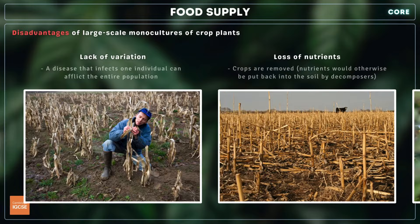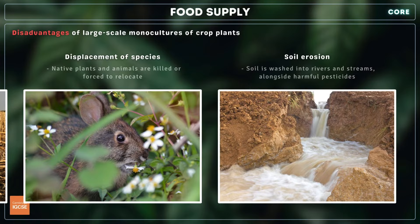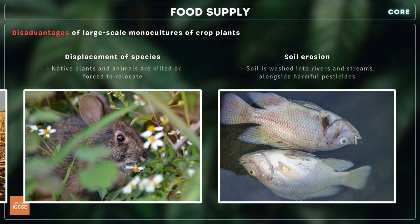However, the lack of genetic variation within a population of crop plants means that the entire population could be wiped out by disease, flooding or drought. Monocultures also result in the loss of nutrients from the land, the death or displacement of natural plant and animal communities, and the degradation and erosion of the soil. In addition, the heavy use of pesticides may cause harm to non-target organisms and contaminate rivers and lakes.